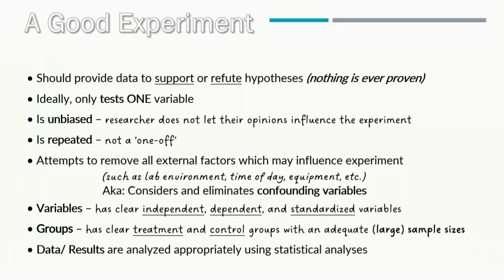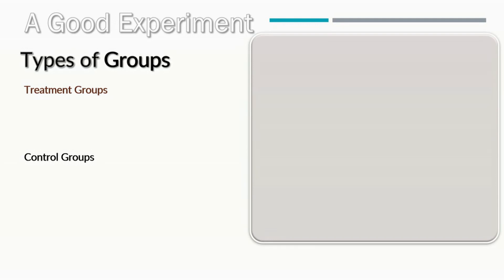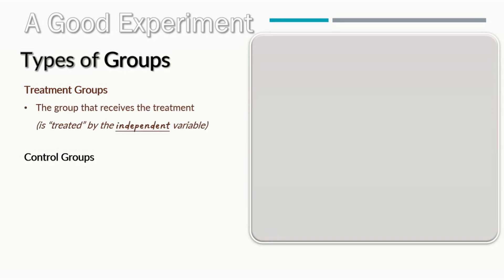Let's move on to looking at groups. Within any experiment there are two main types of groups: our treatment group and our control groups. Treatment groups are the group or groups that receive the treatment — treated usually by our independent variable. Control groups are a point of comparison for the treatment group.